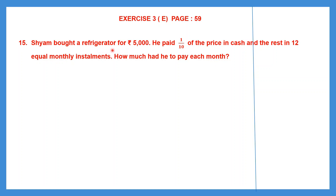Let's understand this problem. Shyam bought a refrigerator for 5000 rupees. He didn't pay the whole amount — he paid only one tenth of that amount in cash and the rest, meaning the remaining money, he paid in 12 equal monthly installments over 12 months in small amounts. We need to find how much he had to pay each month.